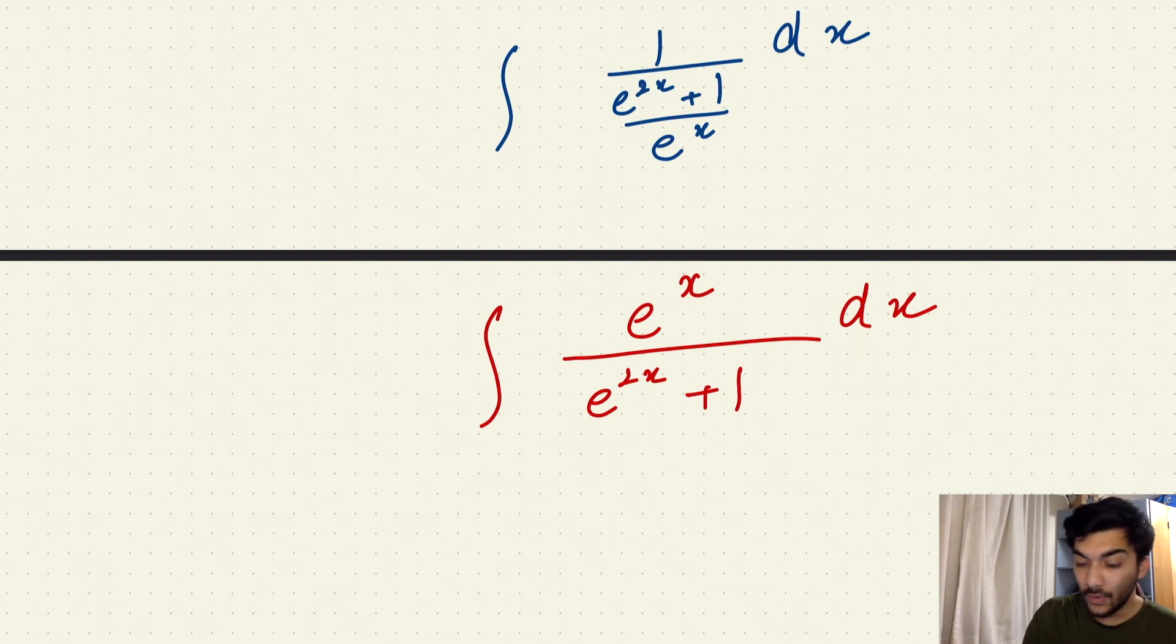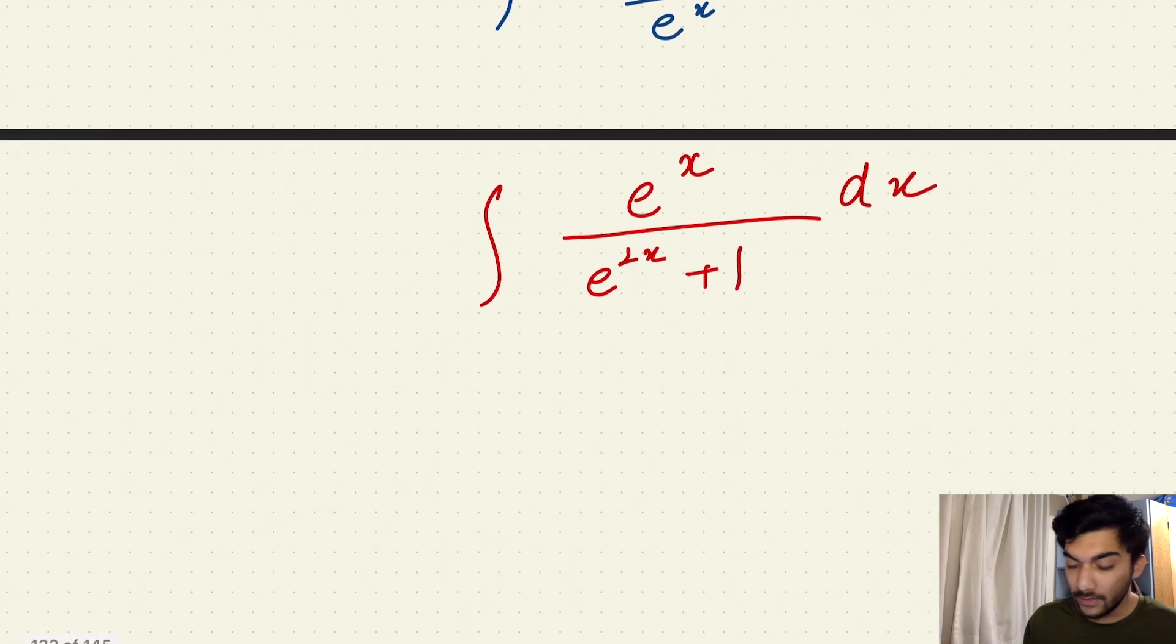And now you would clearly notice in this case that you have an e^x, and you also have one more e^x, which gives you an idea. Since I know that the derivative of an exponential function is again the exponential function, it gives me an idea that I can try solving this question using substitution method to solve this indefinite integral.